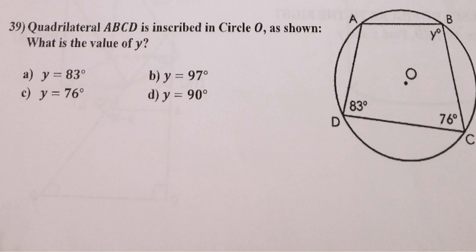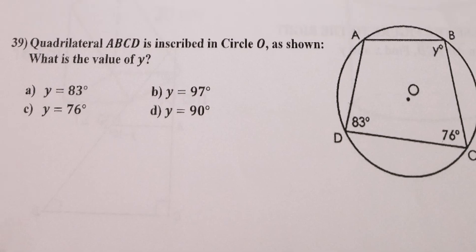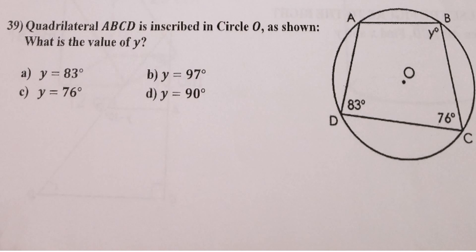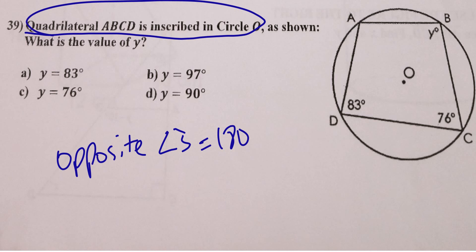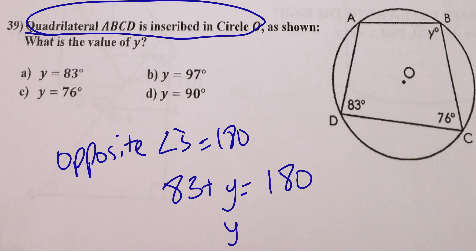Number 39B: there's a rule that when you have a quadrilateral inscribed in a circle, opposite angles equal 180 degrees. So 83 + y = 180; subtract 83 from both sides and y = 97 degrees.